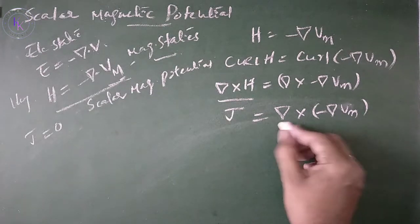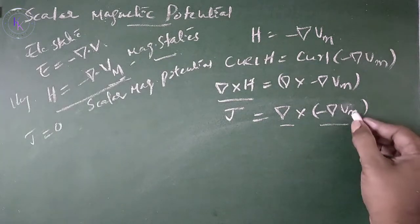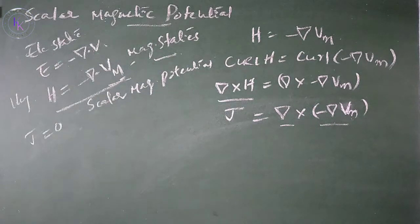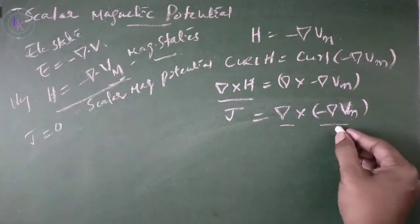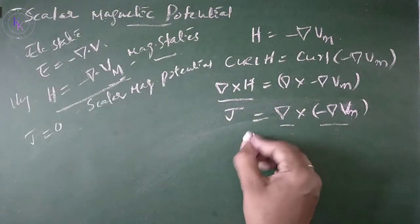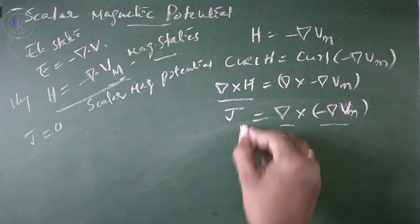The curl of gradient—Vm is a scalar, del of a scalar. Curl of gradient of a scalar equals 0. So J equals 0. This is our condition.